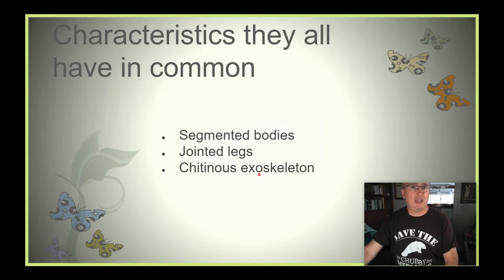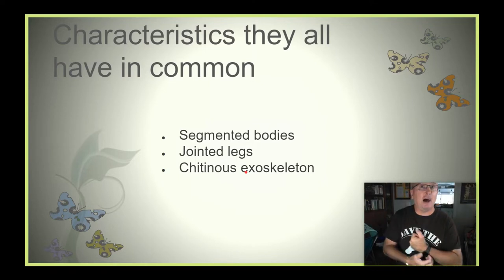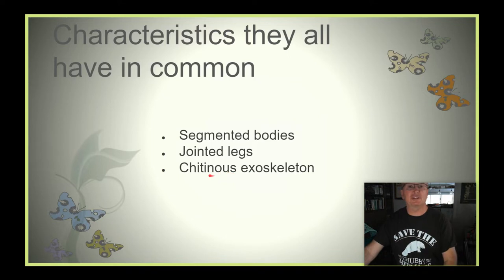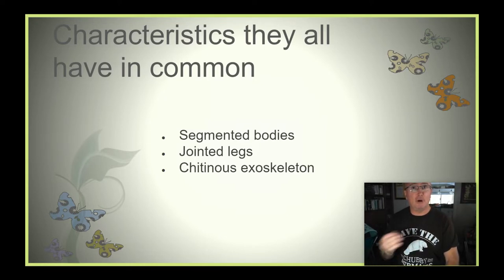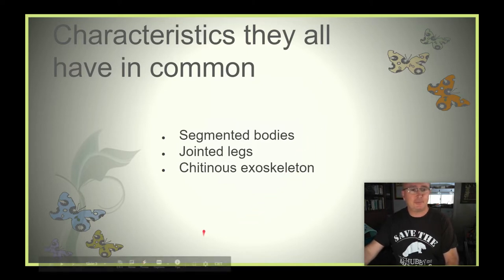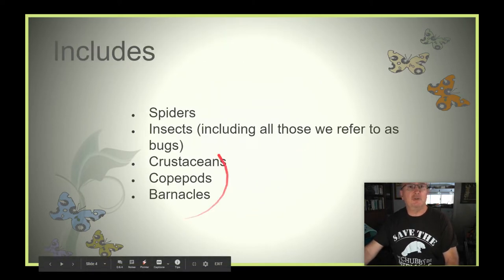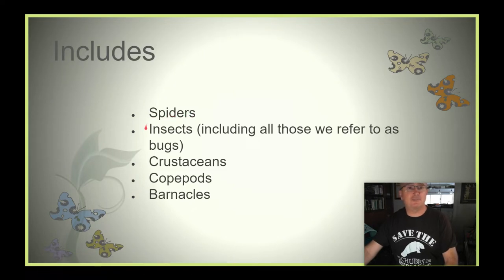This is a very strong and very lightweight exoskeleton, very different than the outer shell of a mollusk. One problem with this chitinous exoskeleton is that as the organism grows, the exoskeleton does not grow, so they must molt it and form a new larger one. This group includes spiders, insects, all those things we call bugs,